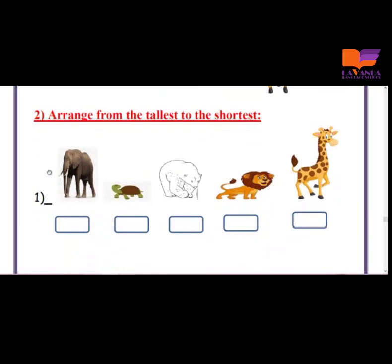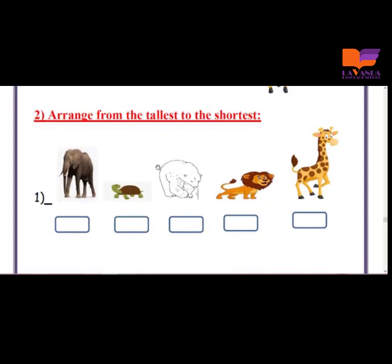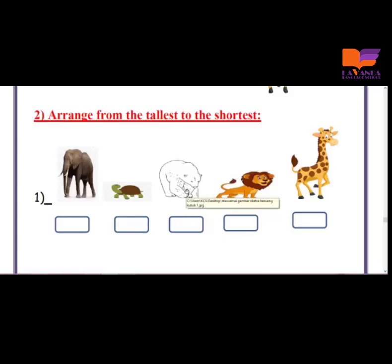In this example, I have a lot of animals, and I need to arrange them from the tallest to the shortest. Obviously, the tallest one is the giraffe. So I will write it first. The second one is the elephant. Then the bear, lion, and finally the turtle is the shortest one.